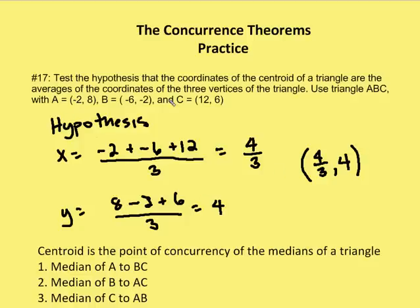The hypothesis is that the coordinates of the centroid are (average of x-values, average of y-values). Taking the x values -2, -6, and 12: they sum to 4, divided by 3 gives 4/3. The y values 8, -2, and 6 sum to 12, divided by 3 is 4. So (4/3, 4) will be the predicted point of concurrency — the centroid.